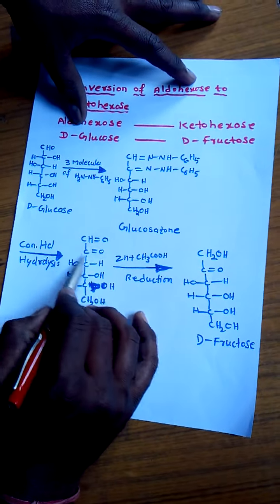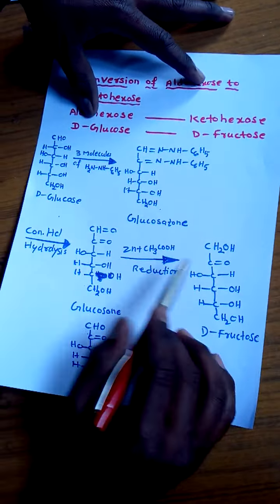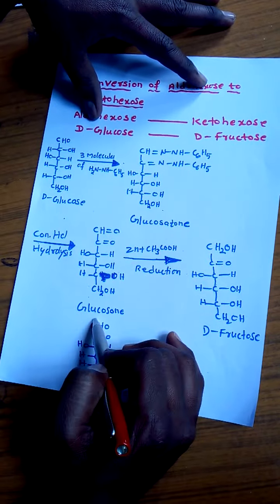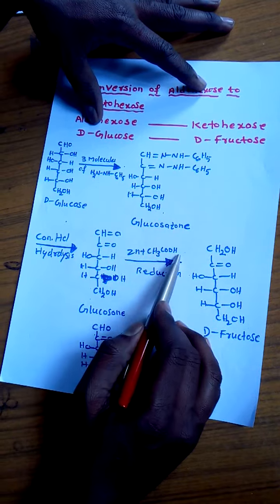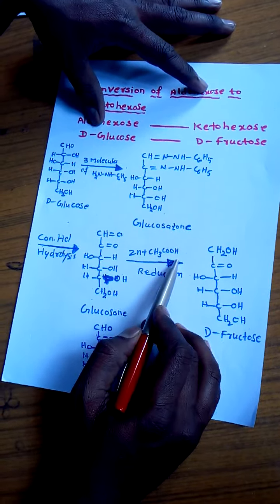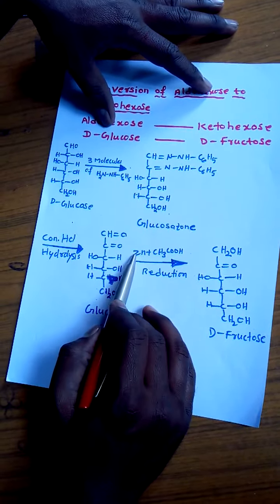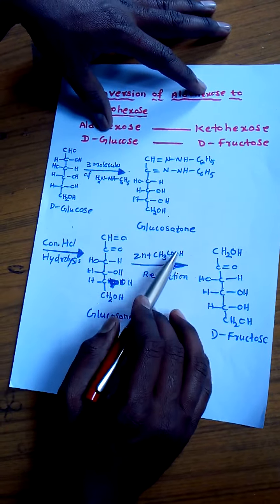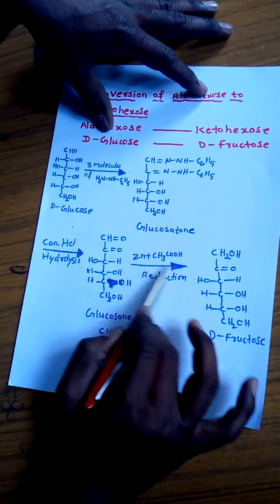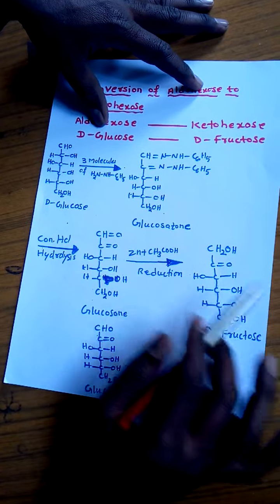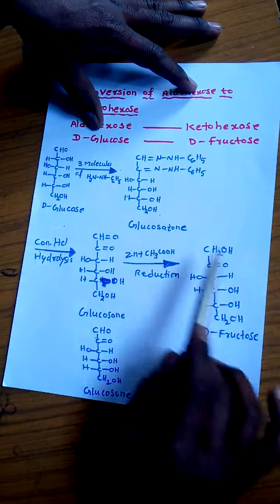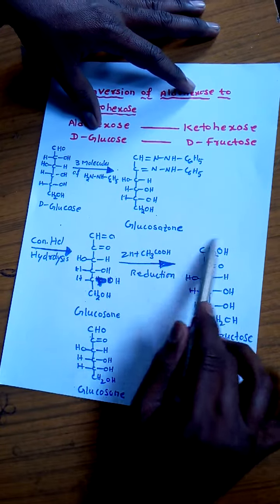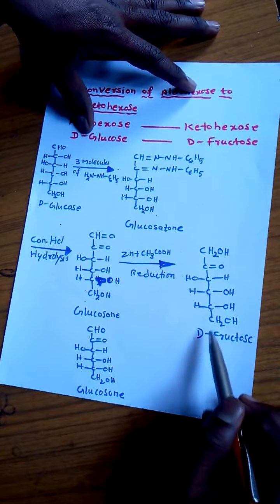Then this glucosone is reduced with zinc-acetic acid mixture. We know very well that all metals are reducing agents and acids are also reducing agents. So the mixture of metal and acids also act as reducing agents. So this aldehyde group undergoes reduction and forms primary alcohol and now it becomes fructose.